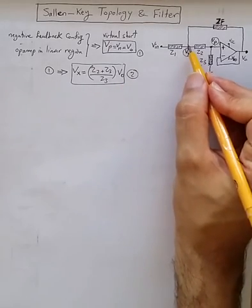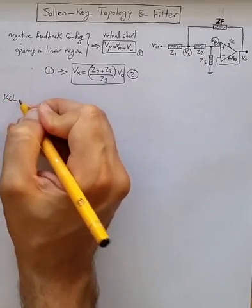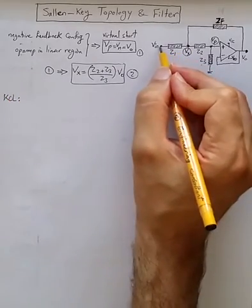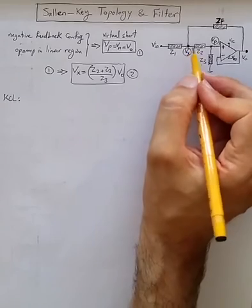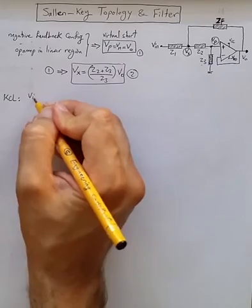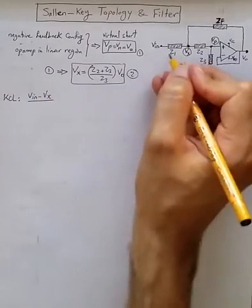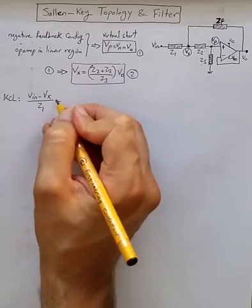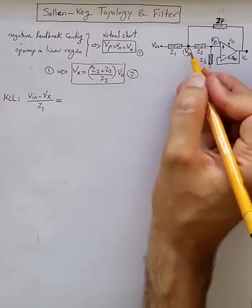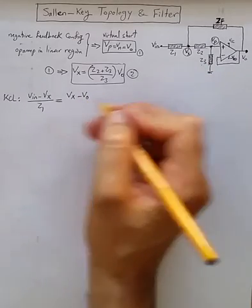Now we can write the KCL for node Vx. So the current flowing through Z1 should be equal to the sum of currents flowing through Z2 and through ZF. So Vn minus Vx divided by Z1, that's the current flowing through Z1, is equal to Vx minus Vp, which is Vout.